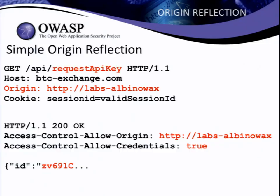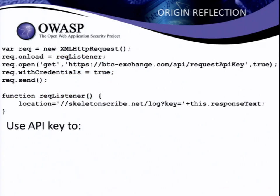The most basic error is simply saying we trust all origins — so whatever origin you say you come from, they agree it sounds trustworthy. I quickly found a fairly major Bitcoin exchange that was doing exactly that. So if a user visited my website LabsAlbinoAxe, I could trigger a request to this Bitcoin exchange saying, hi, I'm LabsAlbinoAxe, can I have this user's private API key please? And the Bitcoin exchange would say, yeah sure, LabsAlbinoAxe, highly trustworthy — and give me their private API key. Logging a user's private API key took just a tiny few lines of JavaScript.